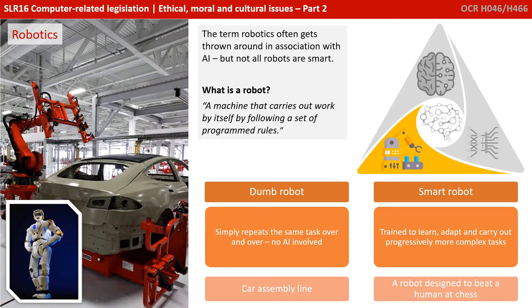You can think of the robots in a car assembly line. And then we have what are called smart robots, trained to learn, adapt and carry out progressively more complex tasks as they evolve. This, for example, is a robot designed to beat a human at chess.